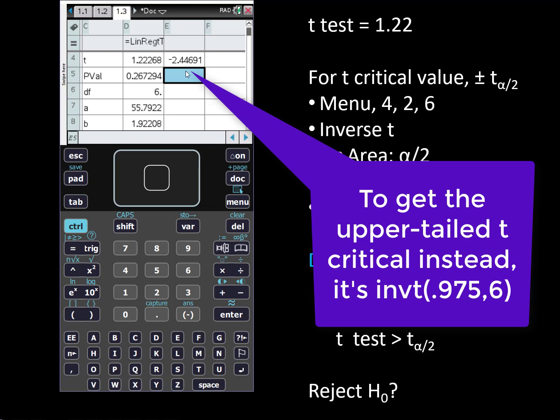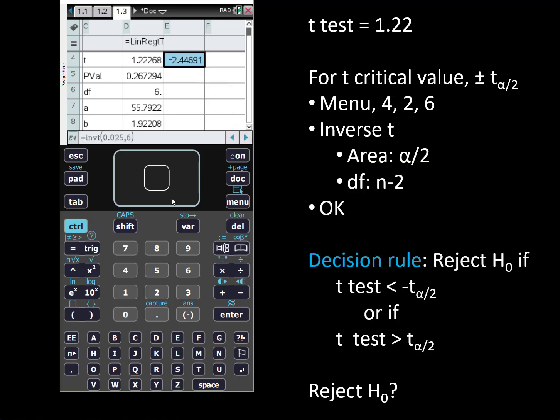So we have a minus 2.44. This is plus or minus 2.4469. And looking at this since I have a positive t-test statistic I would compare this with a positive t-critical value and 1.228 is not greater than 2.4469. Therefore I failed to reject the null. Of course both tests have to agree.